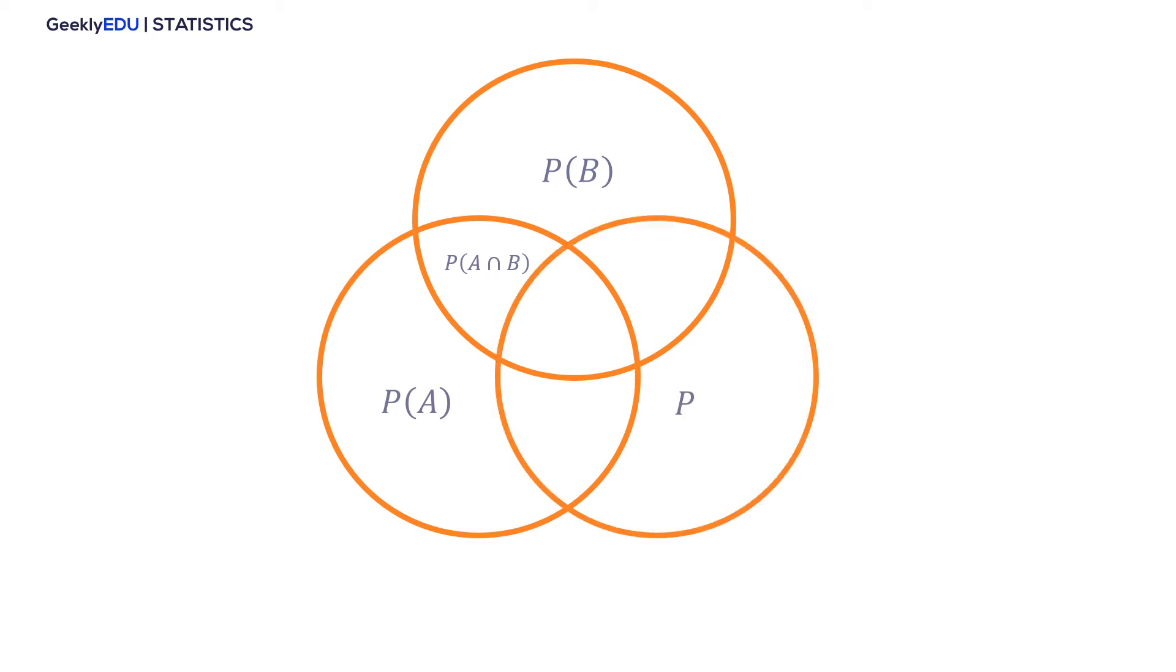Now, what happens if we want to use this rule to know a new set of probabilities resulting of the addition of 3 or more probabilities? We have a probability of A, a probability of B, and as we did before, we have to subtract the simultaneous occurrence of A and B.